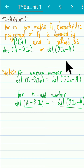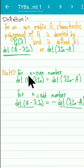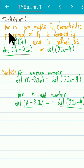So either definition can be used. We will prefer the form: determinant of (A minus lambda I_n). One important note: we need an n×n square matrix to talk about the characteristic polynomial. For a non-square matrix, the characteristic polynomial is not defined.